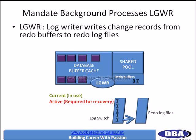Once a redo log file gets full, log switch will happen automatically. The status of current will be changed to active, and it will stay in active state until the information from database buffer cache is flushed. When log switch happens, a checkpoint occurs. Checkpoint calls db writer to write all the information from database buffer cache to dbf files to make it permanent. Until that is done, the first redo log file remains active. Once that is done, the status automatically becomes inactive. Inactive means it is ready to become current again.